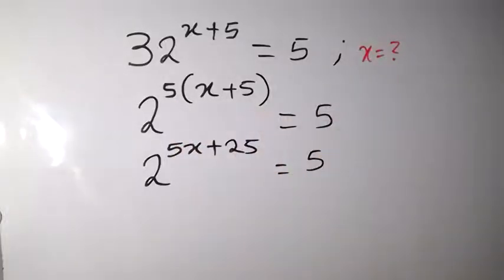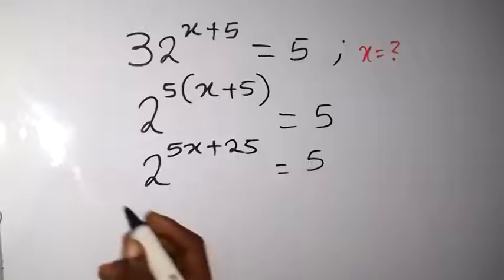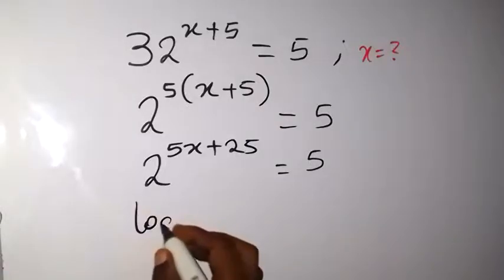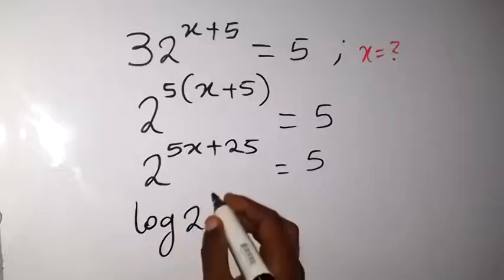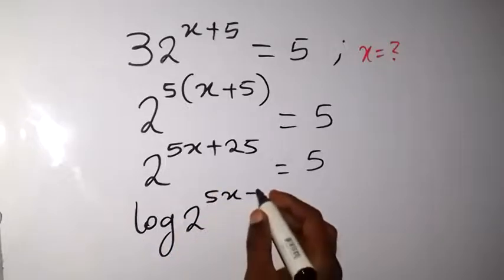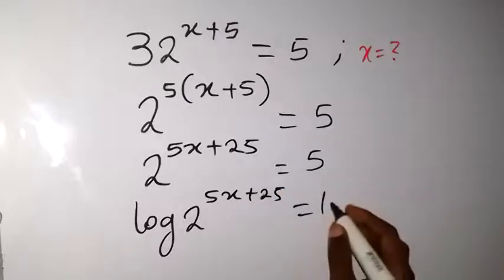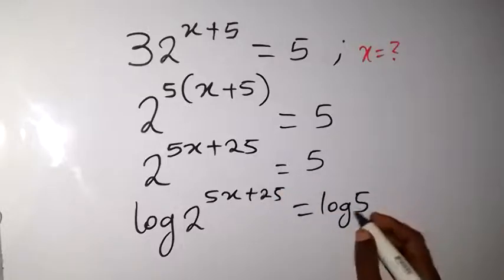And from here we can take the log on both sides. So when you take the log on both sides, we have log 2 raised to power 5x plus 25 equals to log 5.